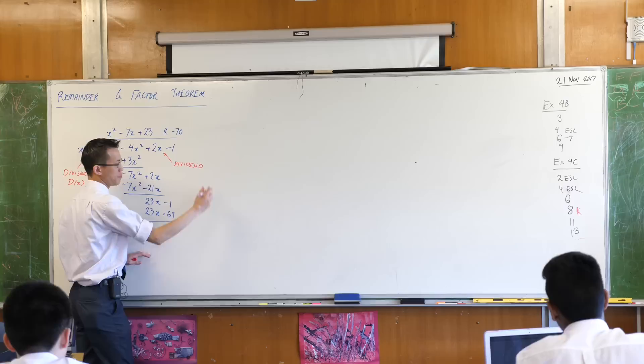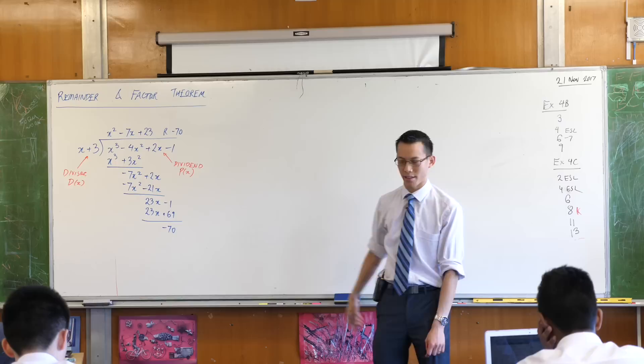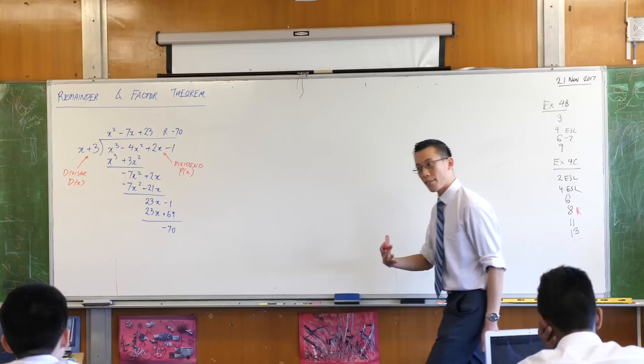It's called the dividend, very good, quite an uncommon word. The dividend is the polynomial you started with, so the polynomial you start with is usually called P. I might as well call it that because I can't call it D anyway because I've already used that letter.